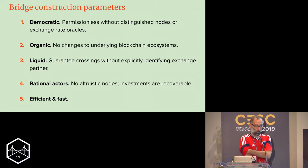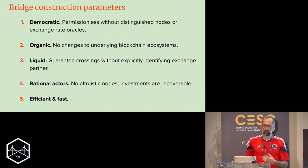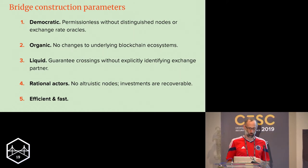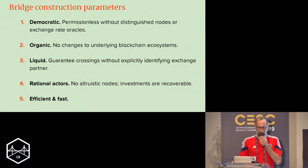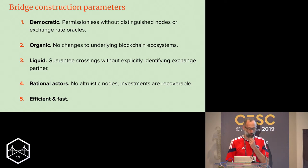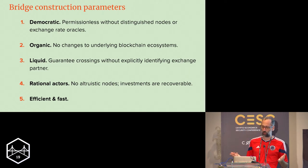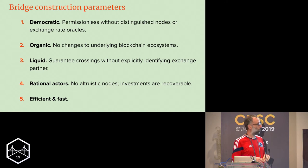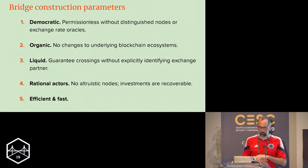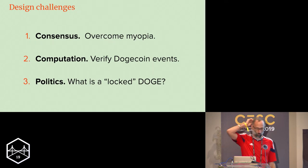In terms of what you'd expect from a bridge like this: it should be democratic, meaning no distinguished nodes or exchange rate oracles — everyone can participate. Organic means no changes to the underlying blockchain systems; it's a retrofitting protocol. You also want something liquid so you can cross without explicitly identifying exchange partners, and of course rational actors — nobody puts funds in unless they eventually get them back out.